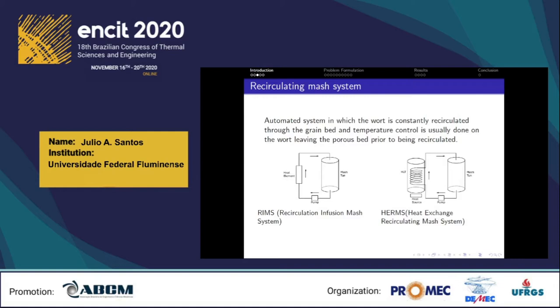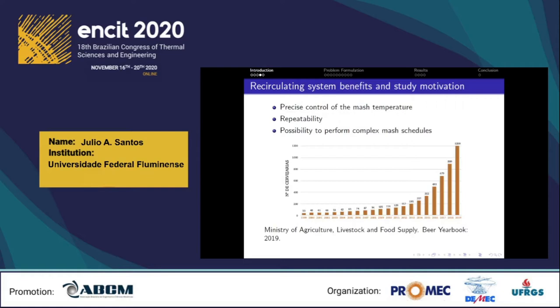The whole process involves more valves and pipes than shown in the figure; the figure just isolates the part of the process that is relevant to the study. Some benefits of these systems are: temperature control is more precise, there is no need to rely entirely on the mash tun's insulation, repeatability — which is important when working with large homebrewing systems — and the possibility to perform complex mash schedules.